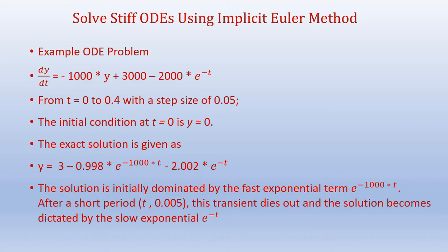For the implicit Euler method, we consider a step size of 0.005 with time varying from 0 to 0.4 units. The initial condition remains y(0) = 0 and the exact solution is the same. We will notice that the solution is initially dominated by the fast exponential term e^{-1000t}. After about t = 0.005, this transient dies out and the solution becomes dictated by the slow exponential term e^{-t}.